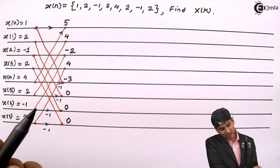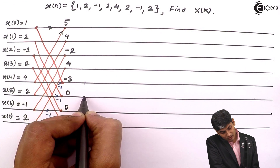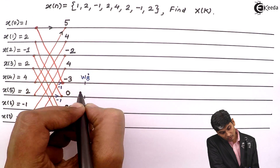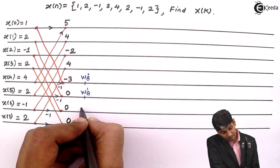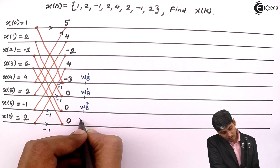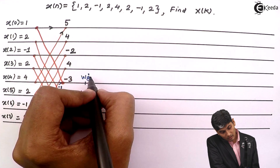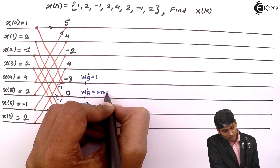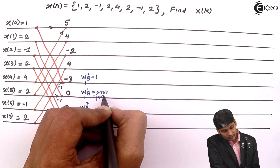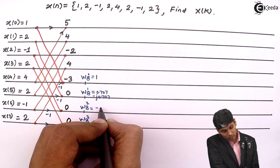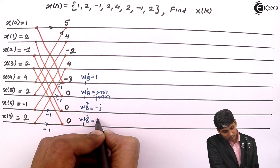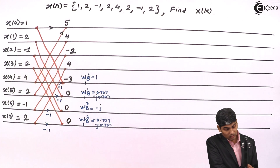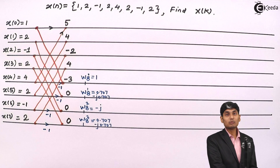Now we have further multipliers on the last 4 lines: W8 raised to 0, W8 raised to 1, W8 raised to 2, and W8 raised to 3. W8 raised to 0 is 1. W8 raised to 1 is 0.707 minus j 0.707. W8 raised to 2 is minus j. W8 raised to 3 is minus 0.707 minus j 0.707.